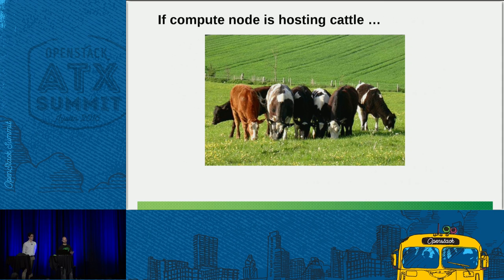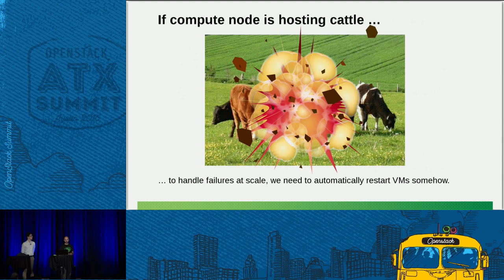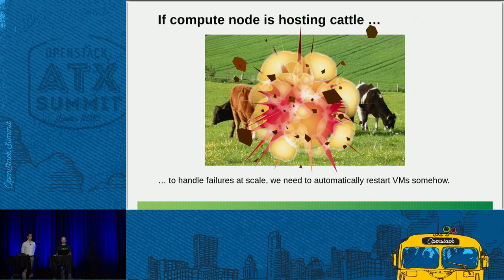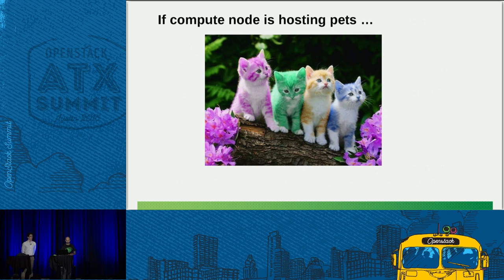If a compute node is hosting cattle, over time failures mean the service becomes more and more degraded, and manually restarting them is a waste of time and unreliable due to the human factor. So we need some kind of automated way of doing this. Heat used to support this with the HA Restarter, but that was deprecated in Kilo. I talked to the current PTL of Heat recently and apparently there are no plans to bring this functionality back, although new convergence and self-healing capabilities are being added to Heat. You can do restarting through the APIs as normal, but you need to do it yourself.